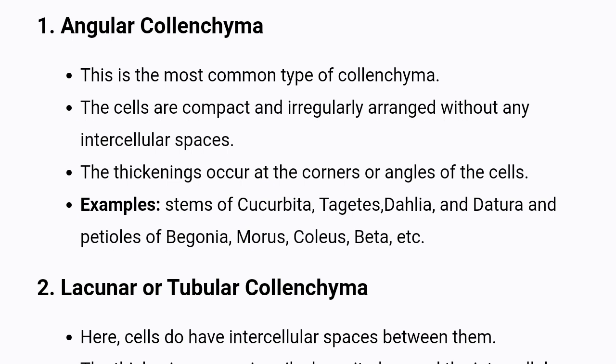The thickenings occur at the corners or angles of the cells. Examples: stems of Cucurbita, Tagetes, Dahlia, and Datura, and petioles of Begonia, Morus, Coleus, Beta, etc.